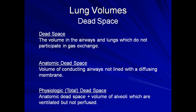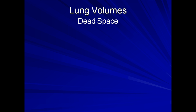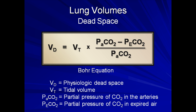Anatomic dead space cannot be accurately measured short of autopsy. However, physiologic dead space, which is luckily much more useful, can be calculated from the Bohr equation. The Bohr equation states that the physiologic dead space is equal to the tidal volume times the difference between the partial pressure of carbon dioxide in the arteries and in expired air, all divided by the partial pressure of carbon dioxide in the arteries. The partial pressures of CO2 can be easily measured, as we will see in lecture 5. This is definitely one equation that you should not bother committing to memory. Because anatomic dead space is much less important than physiologic dead space, most clinicians use the shortened term dead space to refer strictly to the latter, and I will adopt the same convention in these lectures.